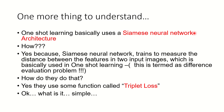One more very important point: one-shot learning is fundamentally using a Siamese neural network architecture. Remember that — Siamese neural network architecture. The Siamese neural network trains to measure the distance between two input images, specifically the distance between the features in the two input images, which is basically used as the fundamental concept in one-shot learning. This is called the difference evaluation problem.